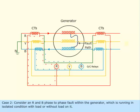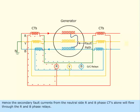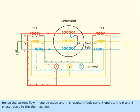Case 2: Consider an R and B phase-to-phase fault within the generator, which is running in isolated condition with load or without load on it. Hence, the secondary fault currents from the neutral side R and B phase CTs alone will flow through the R and B phase relays. Hence, the current flows in one direction and this resultant fault current operates the R and B phase relays to trip the machine.